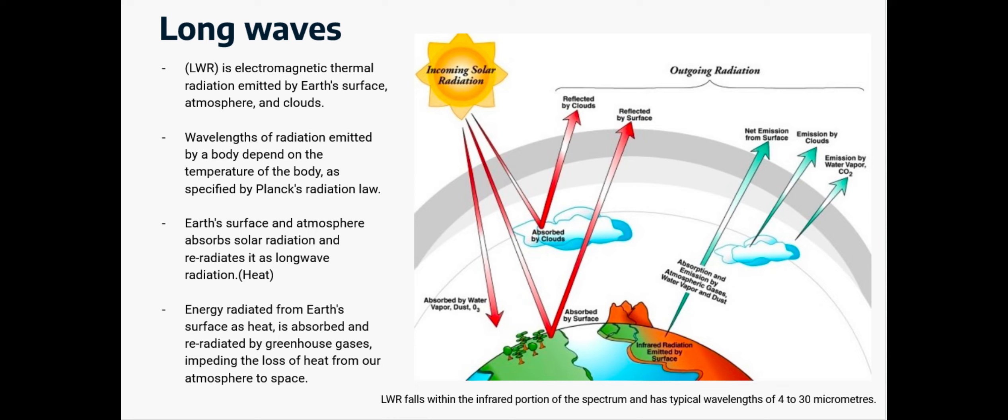Long waves, or LWR, is electromagnetic thermal radiation emitted by earth's surface, atmosphere, and clouds. Large wavelengths of radiation emitted by a body depend on the temperature of a body, as specified by Planck's radiation law. Earth's surface and atmosphere absorb solar radiation and re-radiate it as long wavelength radiation. Energy radiated from earth's surface as heat is absorbed and re-radiated by greenhouse gases, impeding the loss of heat from our atmosphere to space. LWR falls within the infrared portion of the spectrum and typically have wavelengths from 4 to 30 micrometers.